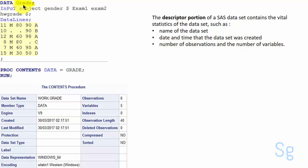As you can see the name of the data set grade is present here. The date of creation, the number of observations that is number of rows, number of variables that is number of columns can be seen from the descriptive portion of a SAS data set.